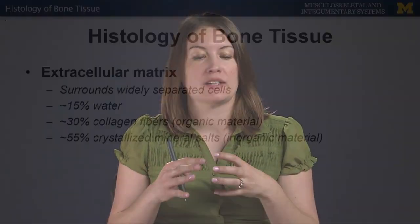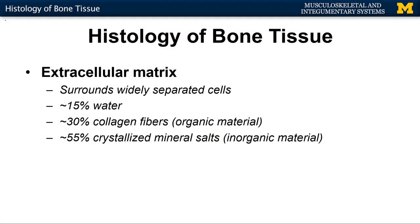Let's get down into the molecular level of the skeletal system. What's actually making the bone? How does it get hard? What we need to focus on is the extracellular matrix — this is what's surrounding those widely separated cells. If you've ever seen a histological slide of bone tissue, you'll see a very distinct darker area, and then ever-expanding rings, very similar to tree rings.